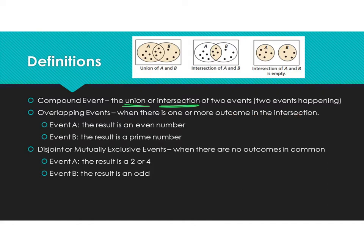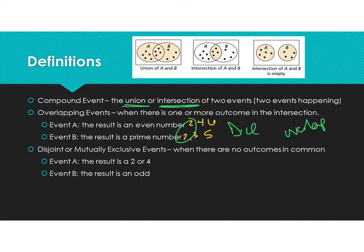Our examples here: if I want to roll two dice, Event A asks what results in an even number. An even number on a die would be 2, 4, or 6. Then a prime number on a die would be 2, 3, and 5. Do I have any overlap or intersection? I do — the number 2. So I always think: what overlap do you have? Disjoint or mutually exclusive — the two words mean the same thing — is when there's no outcomes in common, like this third diagram where there's no overlap at all.